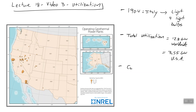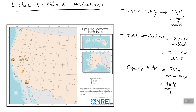The capacity factor of geothermal is very reliable. It is a more or less constant source of heat, and so they tend to run these plants just continuously. The capacity factor is 75% on average across the world for a geothermal plant producing electricity, and they have demonstrated plants that are getting capacity factors of 98%.